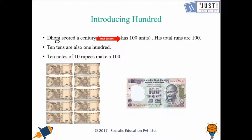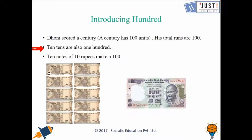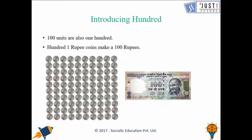So if he has scored a century that means he has scored a hundred runs. A hundred consists of ten tens. So if you have ten rupee notes and you have ten of them, you would have a hundred in total. Similarly, if you have a hundred one-rupee coins, that is also equal to one hundred.